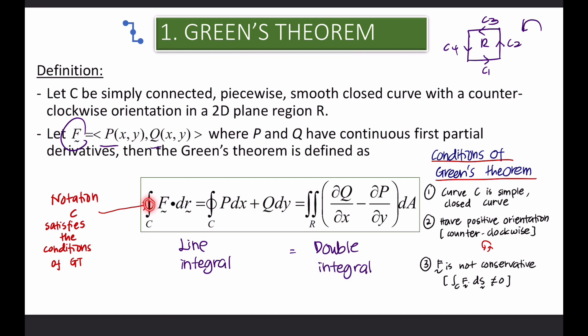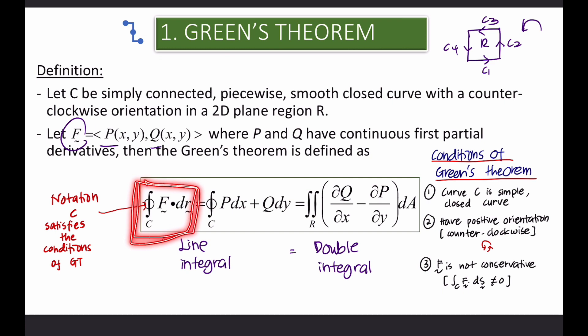This notation for the line integral means that the curve C satisfies all the conditions for Green's Theorem — where the curve C is simple, closed, and has positive orientation — and the vector F is not conservative, meaning the integration of F dot dS is not equal to zero. For Green's Theorem, instead of calculating the line integral using the direct formula, you can calculate it using the double integral.